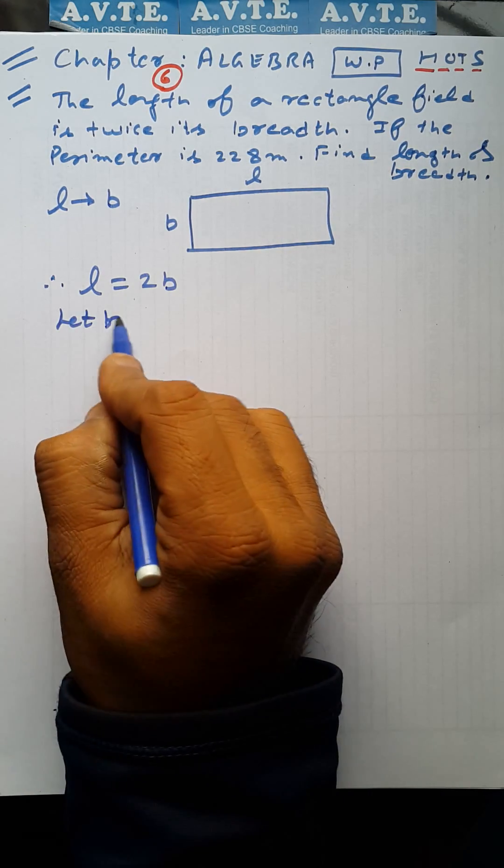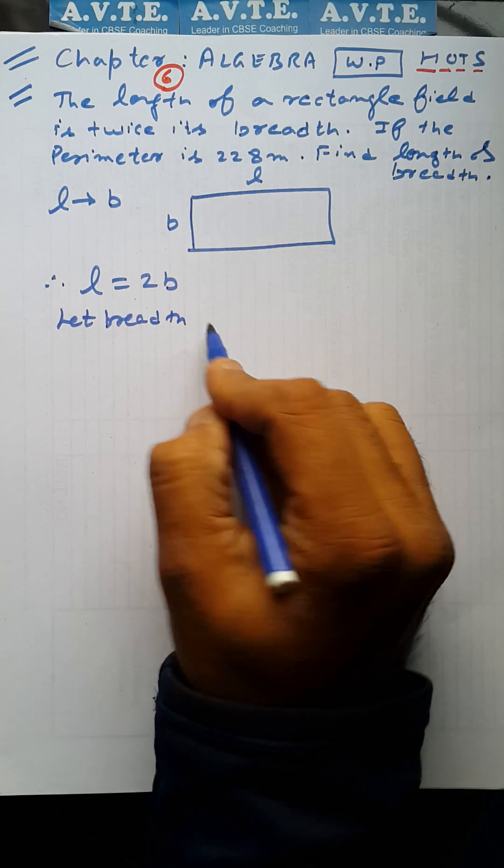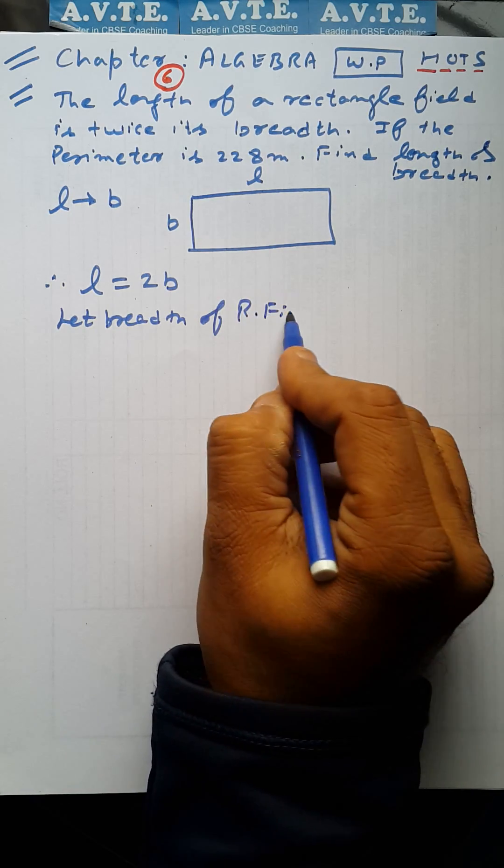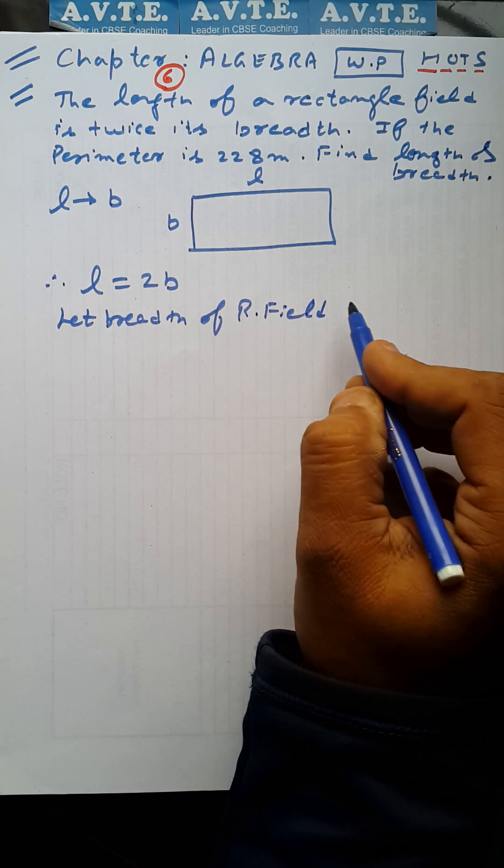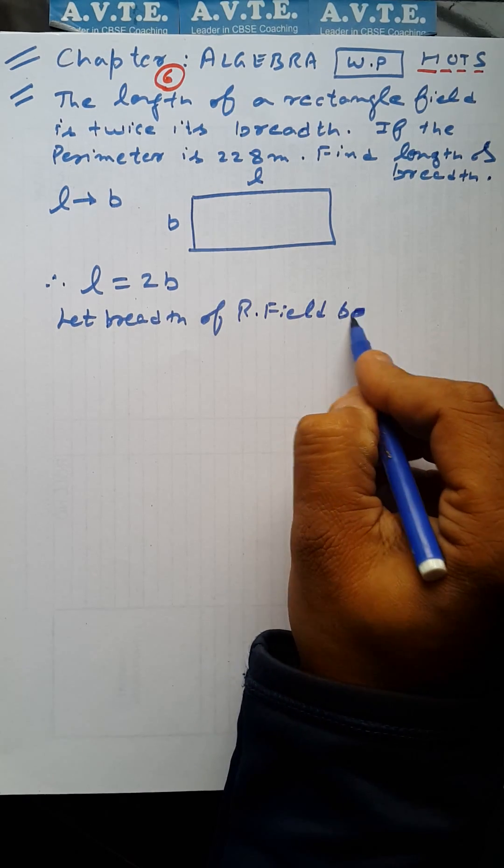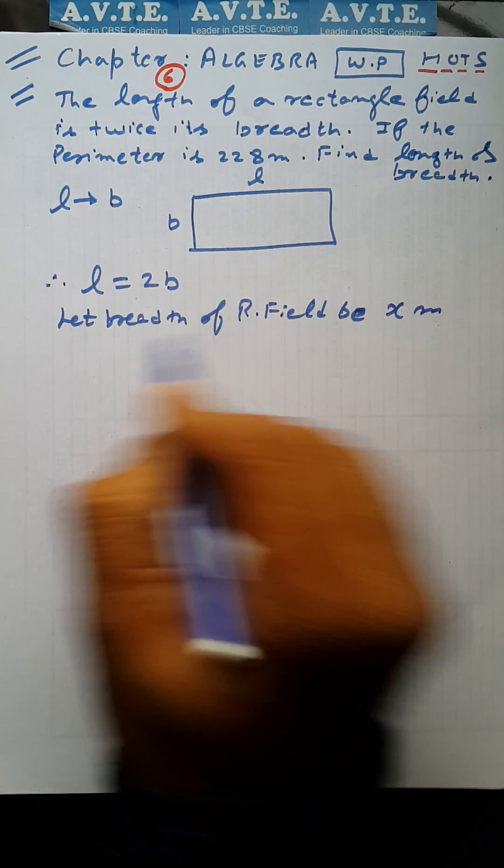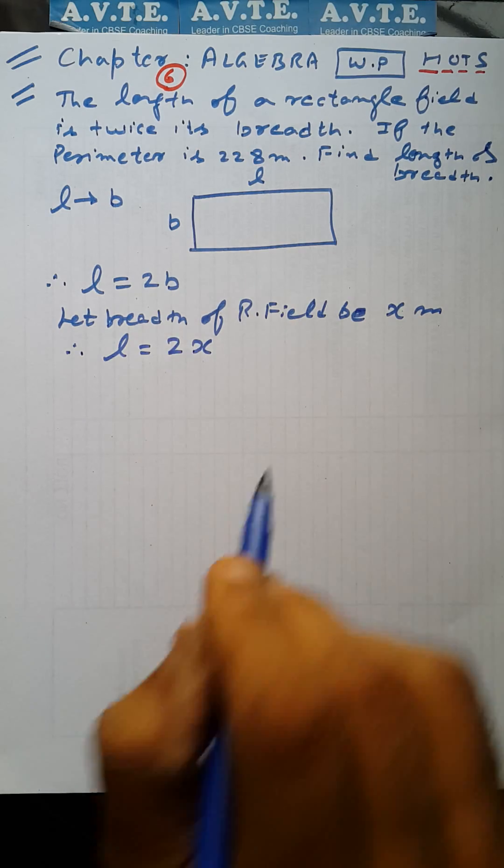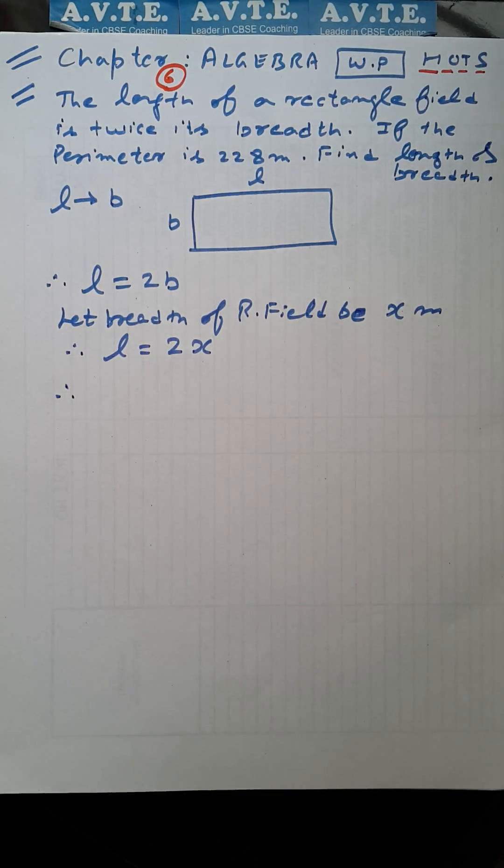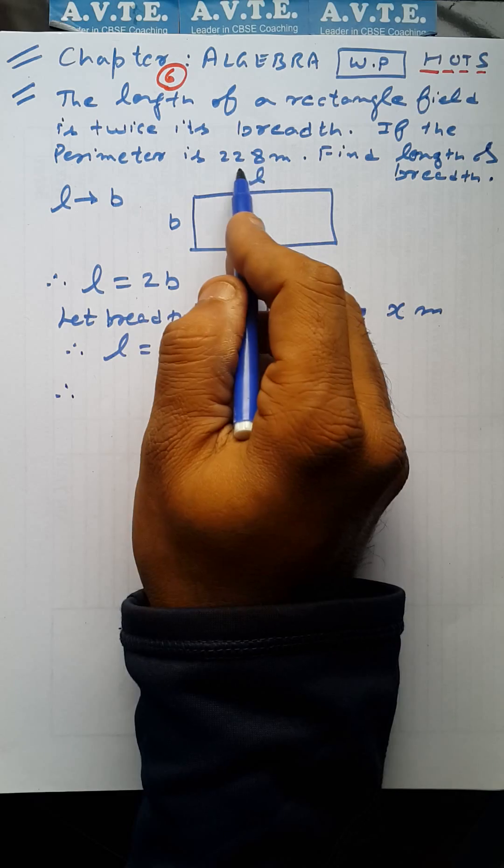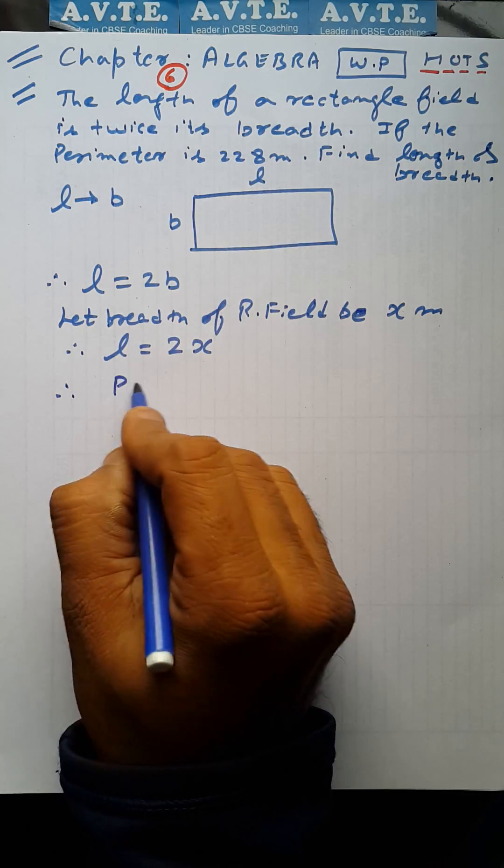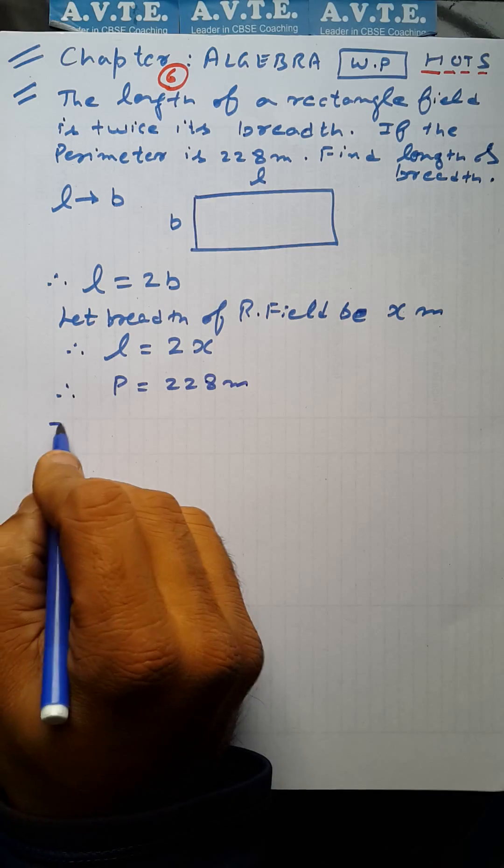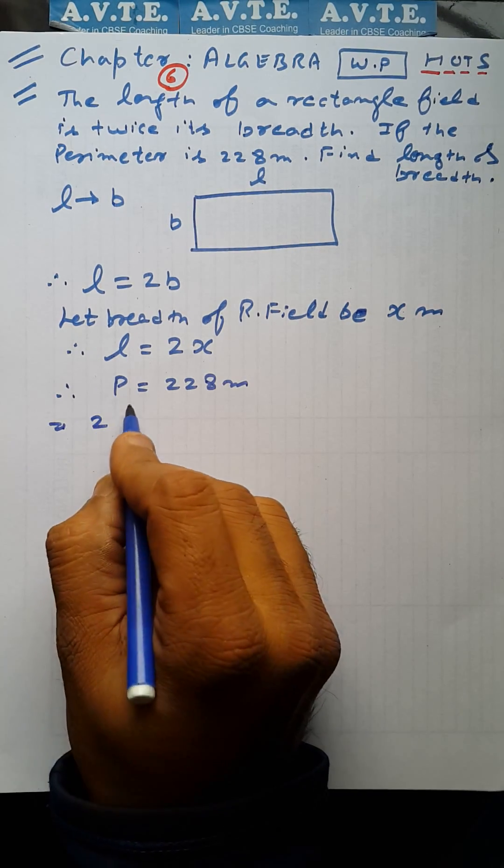Let the breadth of this rectangular field be x, so your length is twice of x. Then the perimeter is 228 meters. The formula is 2(L + B) equals 228 meters.